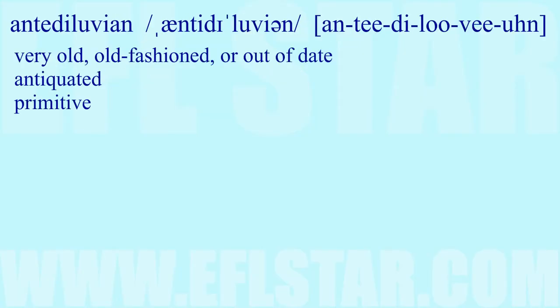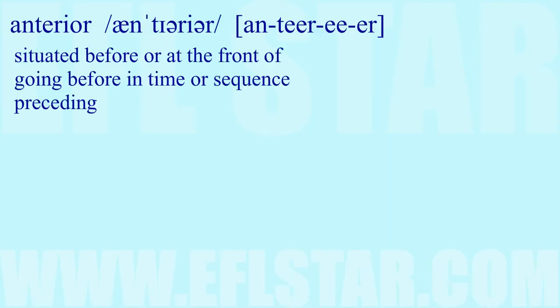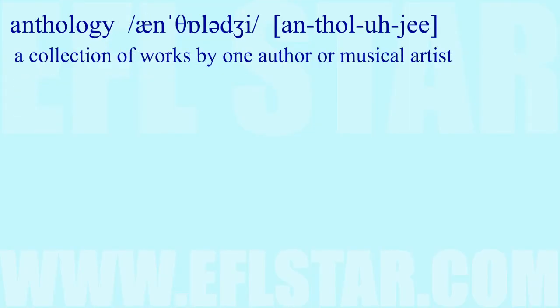Antedate: to be of older date than; to precede in time; to cause to happen sooner. Antediluvian: very old-fashioned or out of date; antiquated; primitive. Antemeridian: occurring before noon. Anterior: situated before or at the front of; going before in time or sequence; preceding.